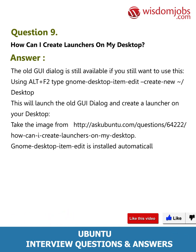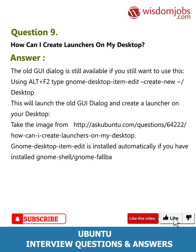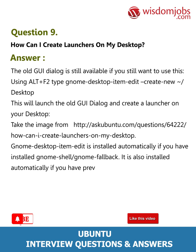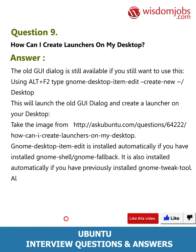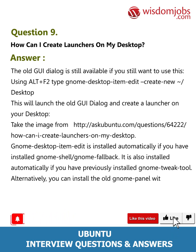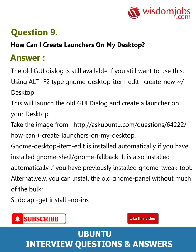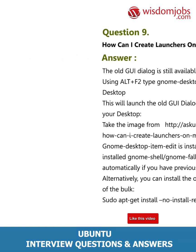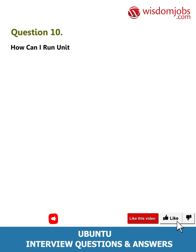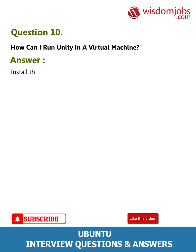gnome-desktop-item-edit is installed automatically if you have installed GNOME Shell or GNOME Fallback. It is also installed automatically if you have previously installed GNOME Tweak Tool. Alternatively, you can install the old GNOME panel without much of the bulk using: sudo apt-get install --no-install-recommends gnome-panel.